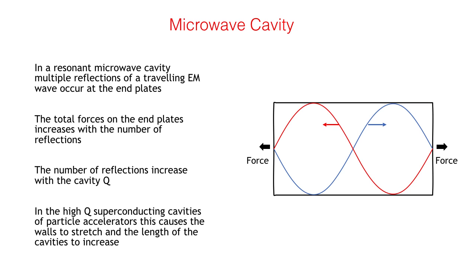An extreme example of this is the superconducting cavities in high-energy particle accelerators, where Q values can be in excess of 1 times 10 to the 9th. This causes large forces on the end plates which stretch the niobium walls of the cavity and illustrate the potential for high thrusts in a superconducting M Drive thruster.